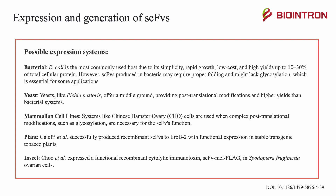Another expression system is yeast. Yeasts like Pichia pastoris offer a middle ground, providing post-translational modifications and higher yields than bacterial systems. Another system uses mammalian cell lines — for example, Chinese hamster ovary cells — which are used when complex post-translational modifications such as glycosylation are necessary for the SCFV's function.